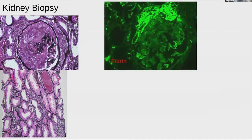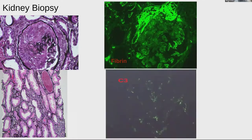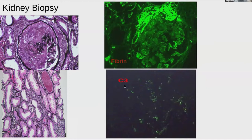This is the immunofluorescence picture for fibrin. This glomerulus stained trace for fibrin. And this is another picture of C3, which was also about trace. So the patient had pauci-immune glomerulonephritis.